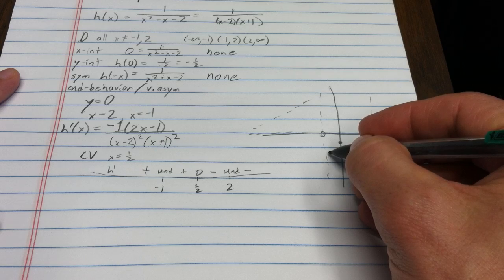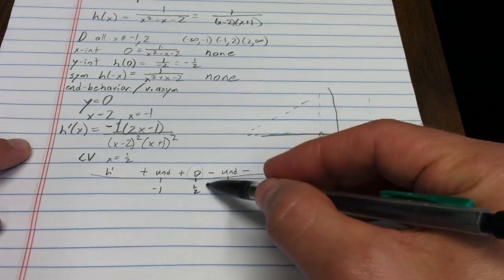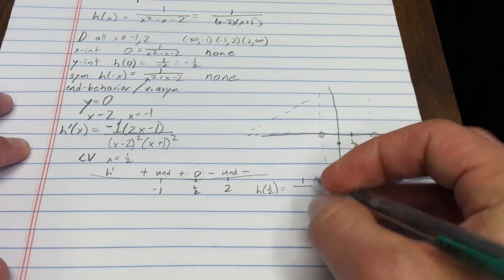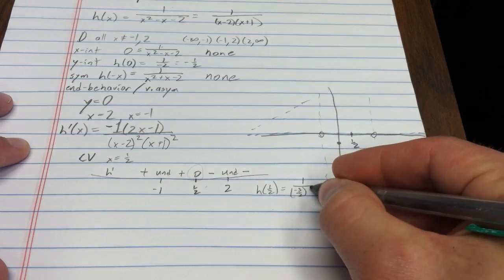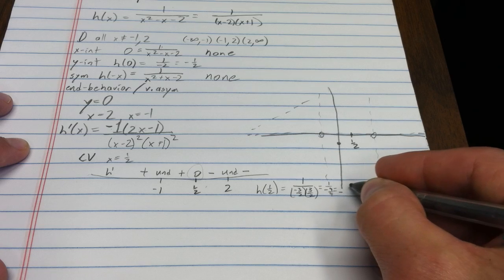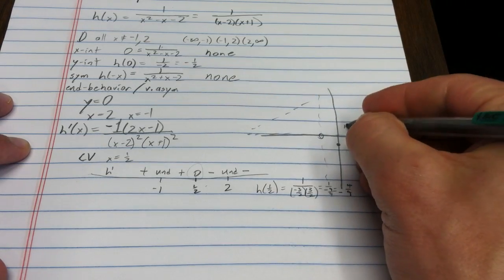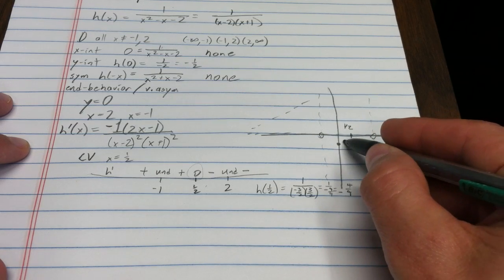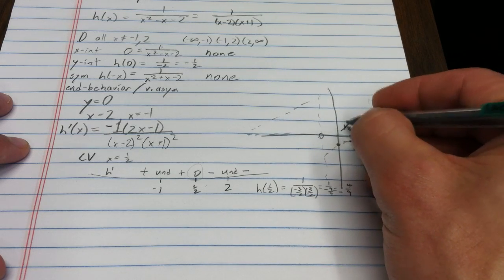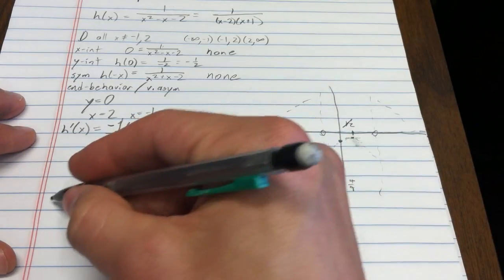So the function is increasing up to x = 1/2 and decreasing after, meaning x = 1/2 is a relative maximum. Plugging back in: h(1/2) = 1 over (negative 3/2)(3/2) = 1 over (negative 9/4) = negative 4/9. That point sits below the x-axis, which makes sense since the curve never crosses it. The function is decreasing on both sides of the vertical asymptotes.